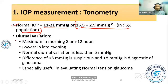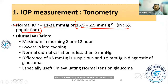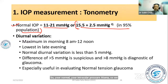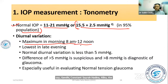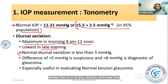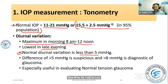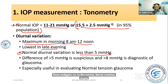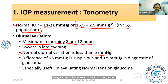Normal intraocular pressure shows diurnal variation throughout the day. Maximum IOP occurs in the morning, from 8am to 12 noon, and the lowest IOP is in the evening. The normal diurnal variation is around 4 to 6 mmHg, approximately five mmHg.